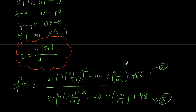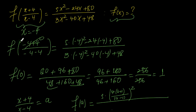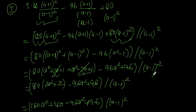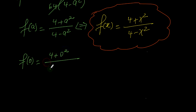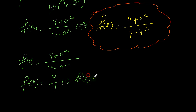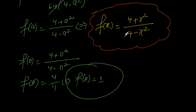Let's verify: we said f of 0 should equal 1. From our answer, f of 0 = (4 + 0²)/(4 − 0²) = 4/4 = 1. This is correct. So our final answer is f of x = (4 + x²) / (4 − x²).